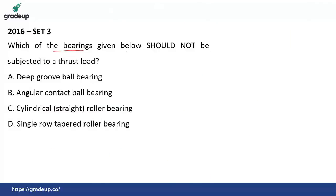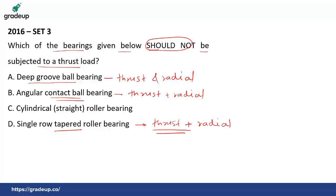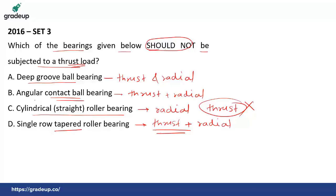Next question: which of the bearings given below should not be subjected to thrust loads (axial loads)? Deep groove ball bearings can sustain both thrust and radial loads. Angular contact ball bearings can also sustain both. Single row tapered roller bearings can sustain both, though they require two rows to balance axial thrust. Cylindrical straight roller bearings can only sustain radial loads and cannot sustain thrust loads. So the answer is option C — cylindrical straight roller bearings should not be subjected to thrust loads.